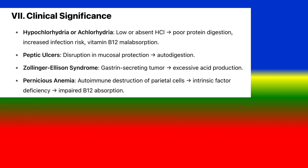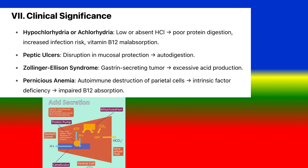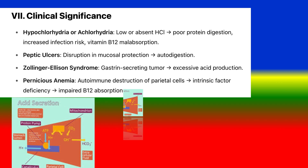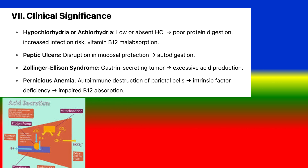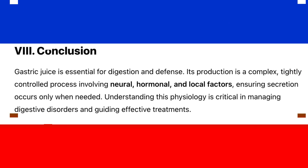Clinical significance: Hypochlorhydria or achlorhydria — low or absent HCL leads to poor protein digestion, increased infection risk, and vitamin B12 malabsorption. Peptic ulcers — disruption in mucosal protection causes autodigestion. Zollinger-Ellison syndrome — a gastrin-secreting tumor causing excessive acid production. Pernicious anemia — autoimmune destruction of parietal cells leads to intrinsic factor deficiency and impaired B12 absorption.